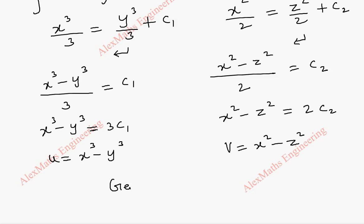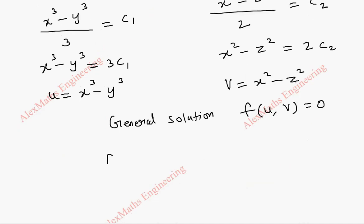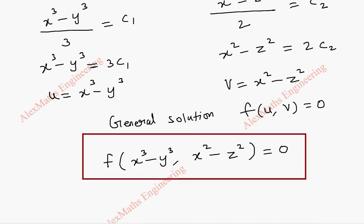Now, using u and v we can get the general solution. And, our general solution is in the form f of u, v equal to 0. So, f of x cube minus y cube comma x square minus z square equal to 0. So, using Lagrange method we got the solution for the given partial differential equation.